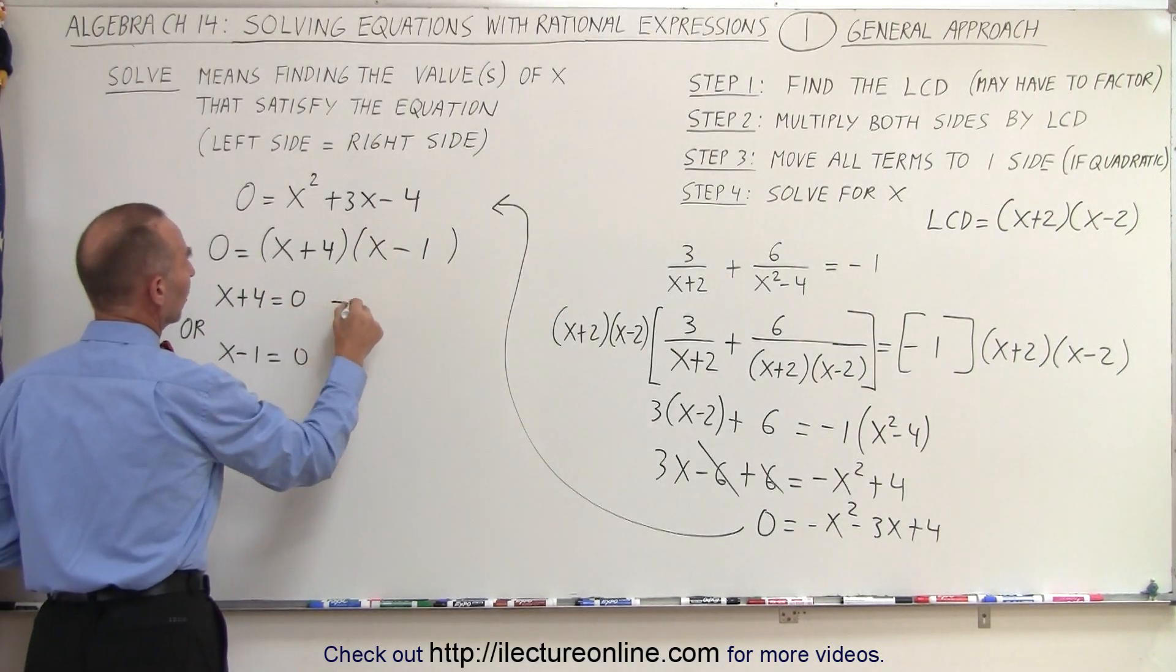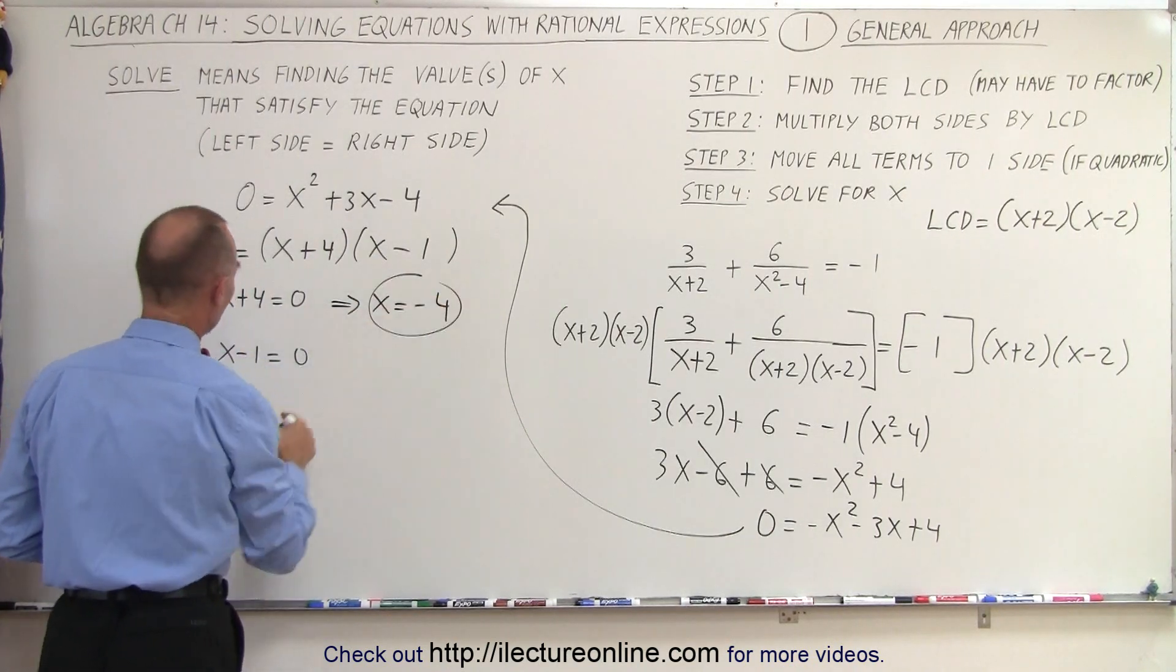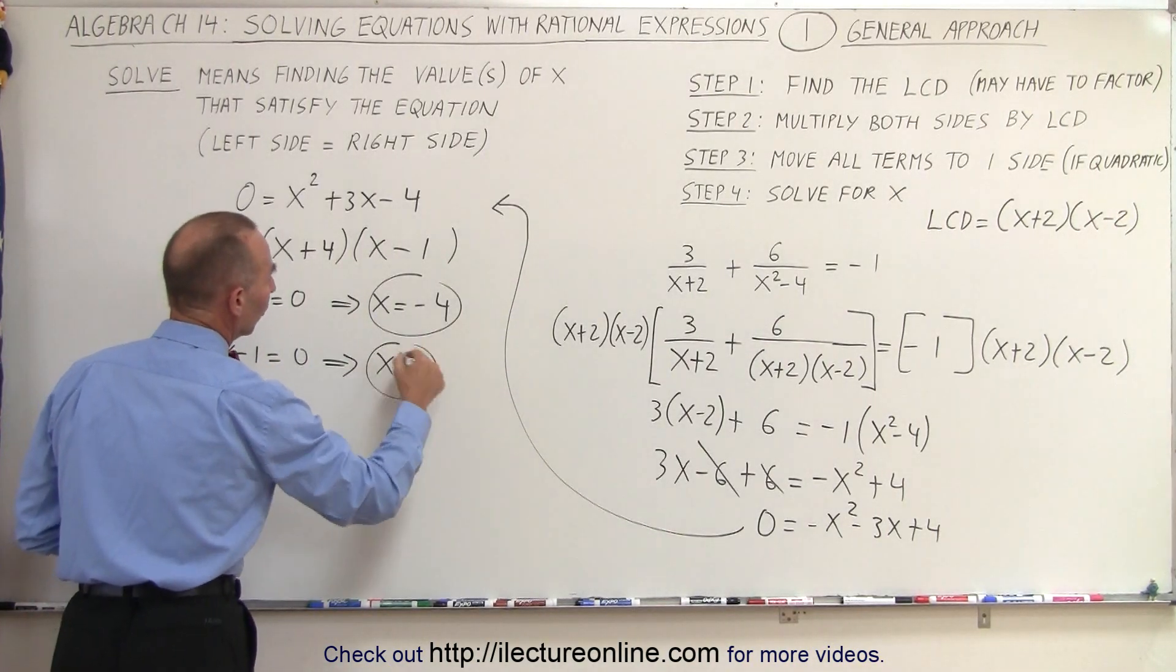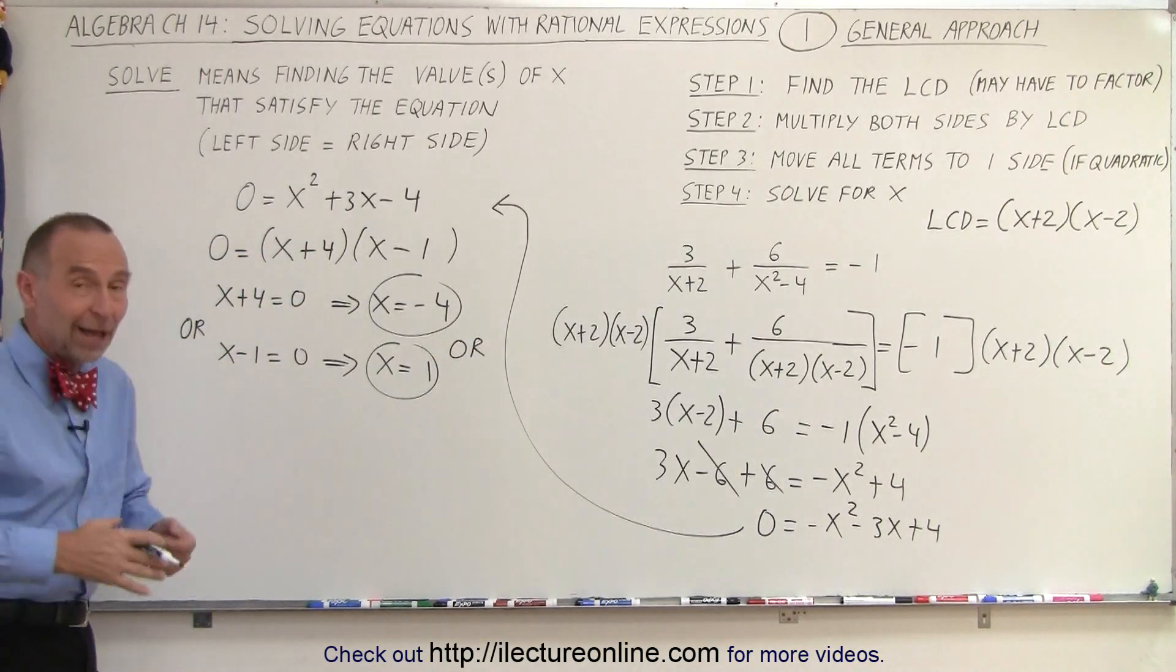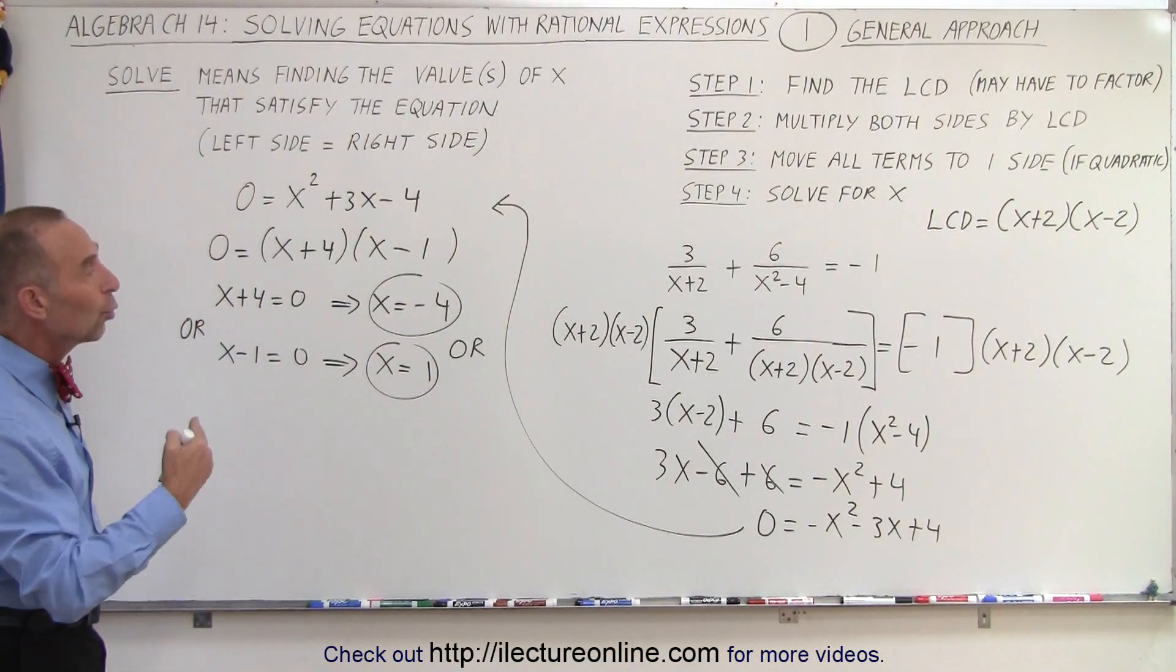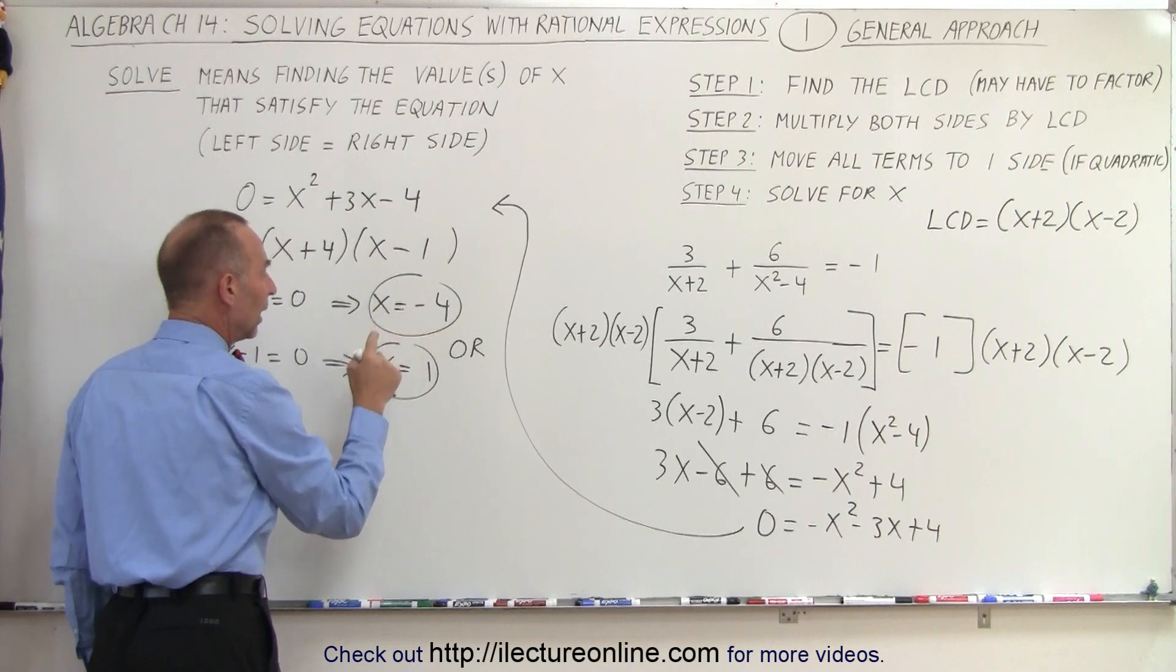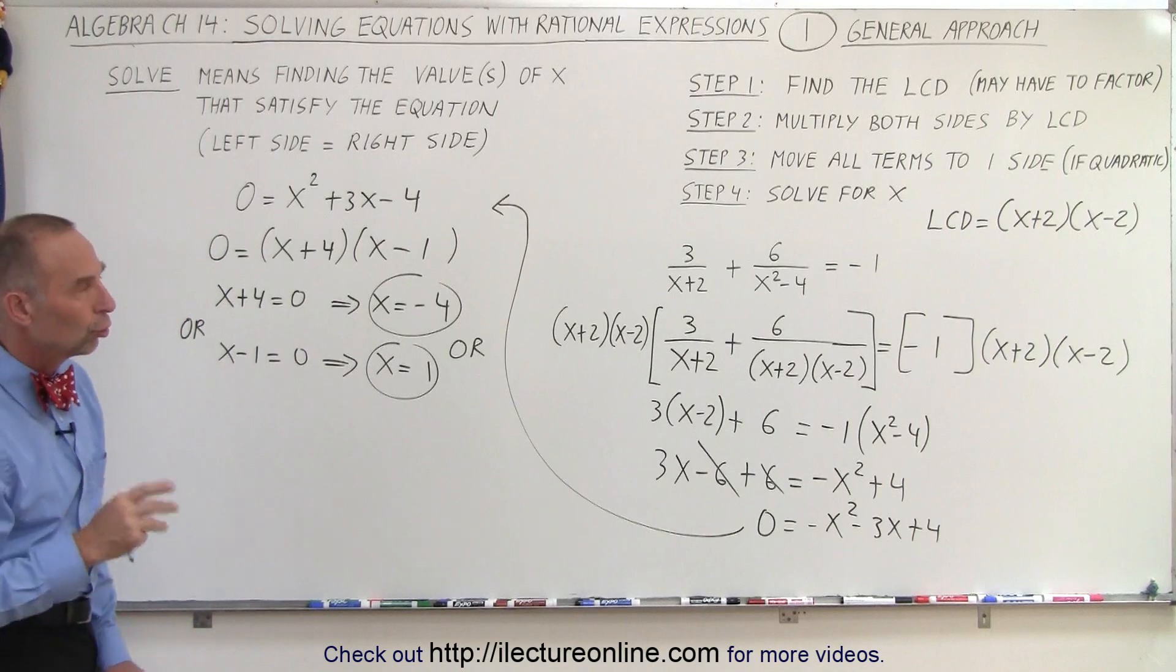Well, if x plus 4 equals 0, that means that x must equal negative 4. And if x minus 1 equals 0, moving the negative 1 over, we can say that x must equal 1. Of course, it's either one or the other. x cannot be negative 4 and positive 1 at the same time. So that means we have solved the equation. The two values that will make the left side equal to the right side are the value for x equals negative 4 and x equals positive 1. And that would typically be the solution.